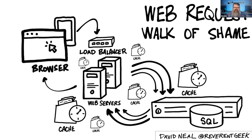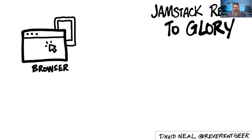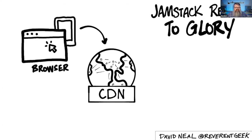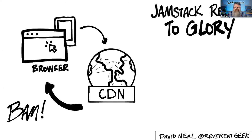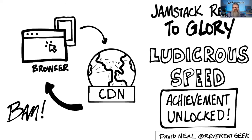Remember the web request walk of shame? Now, in comparison, let me give you the JAMstack request to glory. We have our client — a desktop or mobile browser. It makes a request for a resource such as a web page. The request is routed to the nearest server in a content delivery network, and the CDN — get this — serves the file back to the client. Drop the mic. There is nothing, nothing faster. You have achieved ludicrous speed.